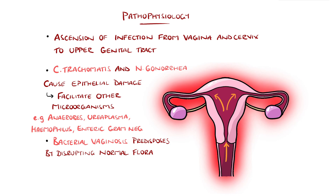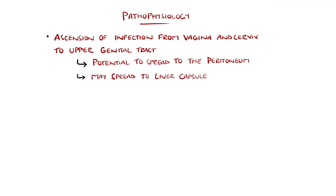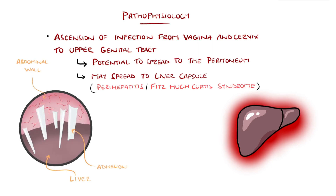In severe cases, inflammation may spread to the peritoneum — the inner membrane that lines the abdomen and pelvis — resulting in peritonitis, which can be life-threatening. It can also spread to involve the liver capsule, called perihepatitis, also known as Fitzhugh-Curtis syndrome, leading to development of adhesions between the liver capsule and the abdominal wall, sometimes called violin string adhesions.